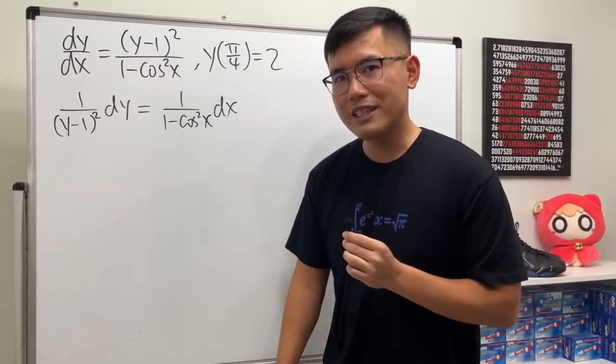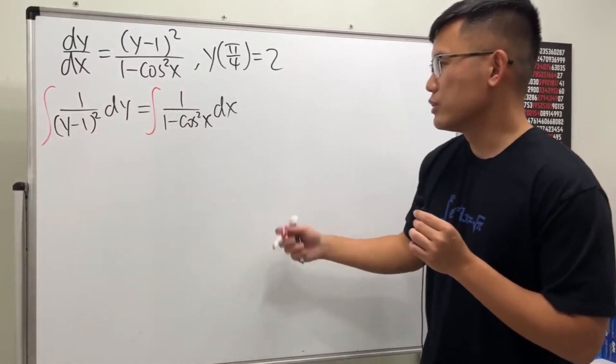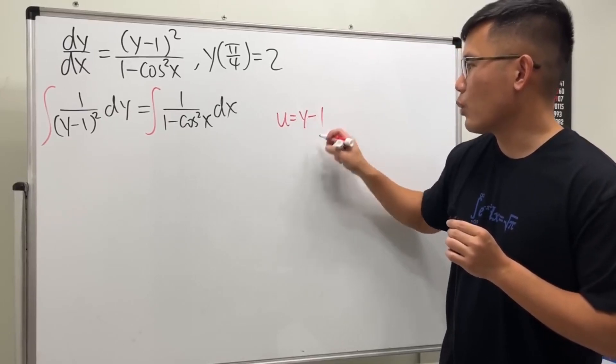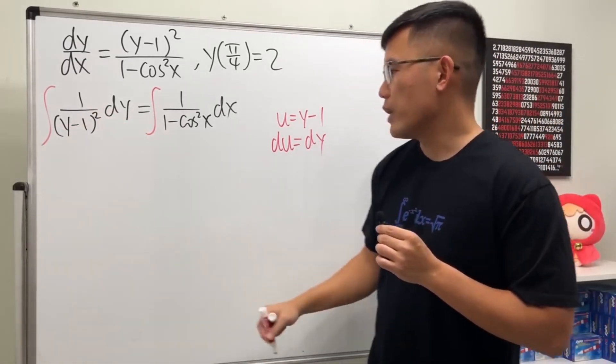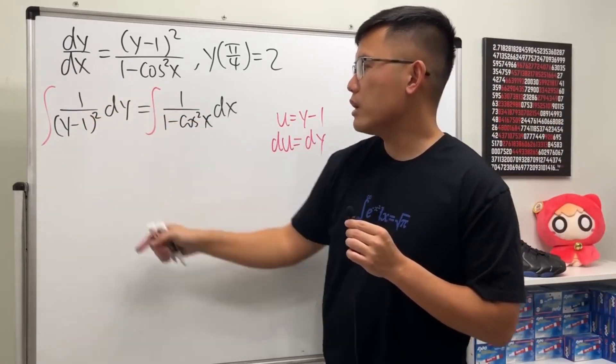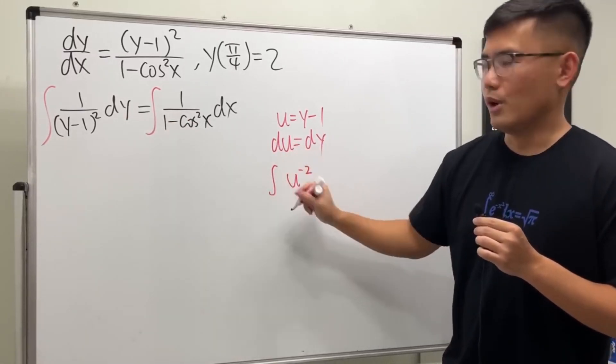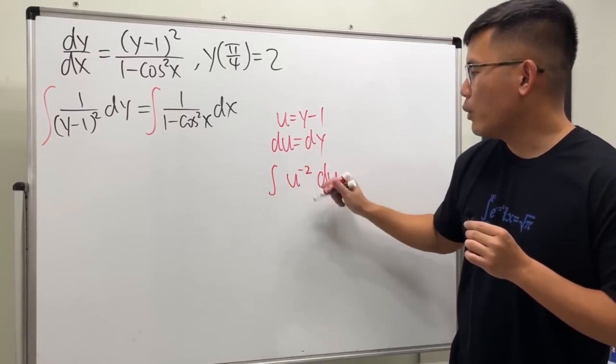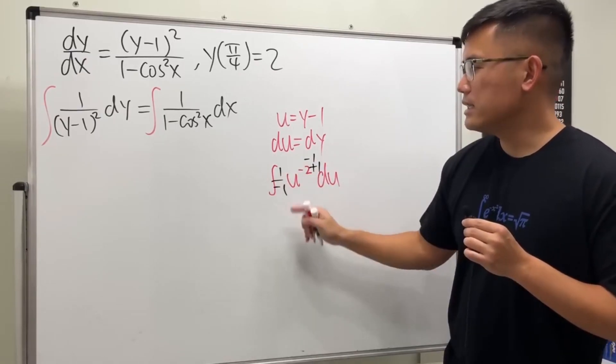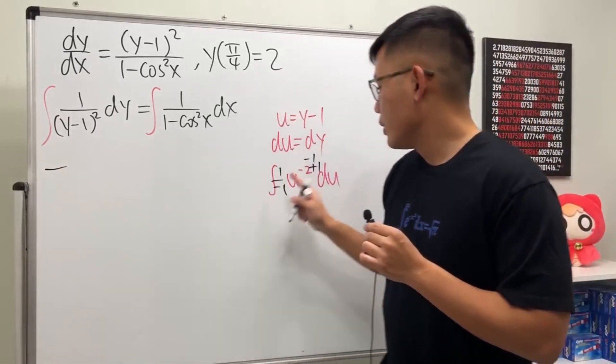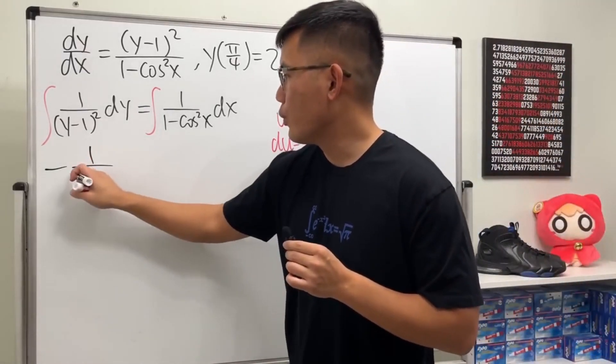When we have this, we can integrate both sides. To integrate this, we do u-substitution where u = y-1. Differentiating both sides, we get du = dy, so we integrate 1/u², which is the same as u^(-2). Using the reverse power rule, add one to the power and divide by the new power, so we get -1/u to the -1 power, which is -1/u, and u = y-1.